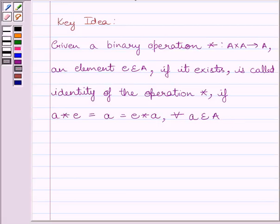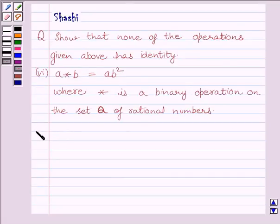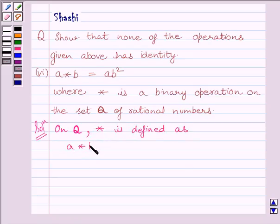Let us now start with the solution. On set Q, binary operation star is defined as a star b equals ab squared.